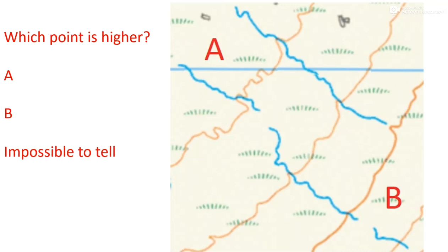Welcome to another navigation task. Looking closely at the map, the task on this one is to work out which point is higher — is it A, is it B, or from the information we've got in front of us, is it actually impossible to tell? What we need to do is have a good understanding of the contours and see if we can work out what their shape actually means.